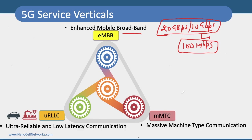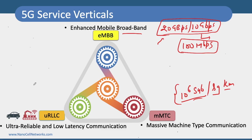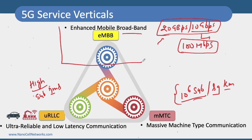In the case of mMTC, data rates are not that important. What we are looking at is 10 to the power of 6, which is 1 million subscribers per square kilometer. In the case of URLLC, data rates are also not the priority — what is more important is ultra-reliability and very low latency: sub-one millisecond, meaning latency of one millisecond or less.